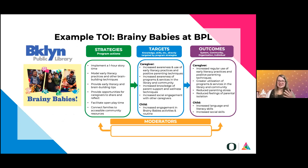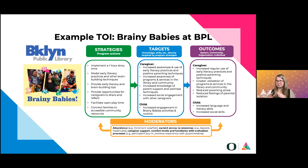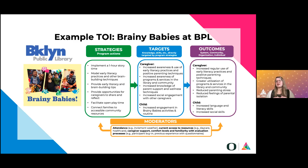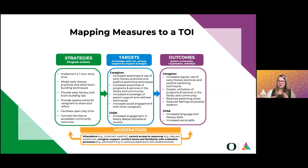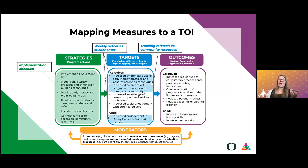To illustrate our TA process and how we discover a program's secret sauce, we use something called the theory of impact. Here's an example from Brooklyn Public Library's Brainy Babies program. Strategies include implementing a one-hour story time, modeling early literacy, and facilitating open play time. Targets include caregivers — increasing their awareness and use of early literacy practices and knowledge of parent support techniques — and children, increasing their engagement in Brainy Babies activities. Outcomes are defined at the caregiver level, such as increasing regular use of early literacy practices, with moderators like attendance and access to resources in mind. This then maps onto the evaluation and connects to the impact website.